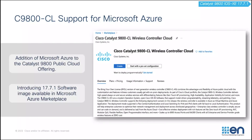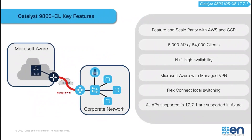With the Cisco Catalyst 1900 CL that has already been offered on AWS and GCP, Cisco has recently released the Catalyst 1900 CL on Microsoft Azure Marketplace. The features and scales are similar with AWS and GCP, which supports a maximum of 6,000 APs and 64,000 clients on a single instance through the Microsoft Azure Management VPN connection.